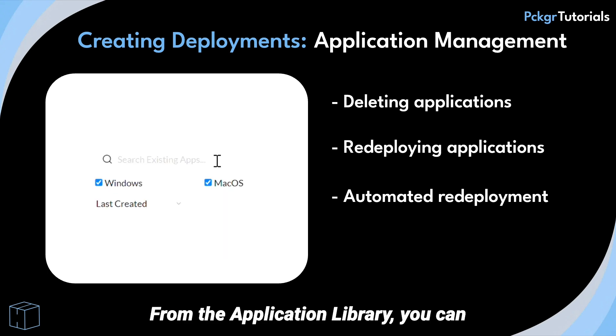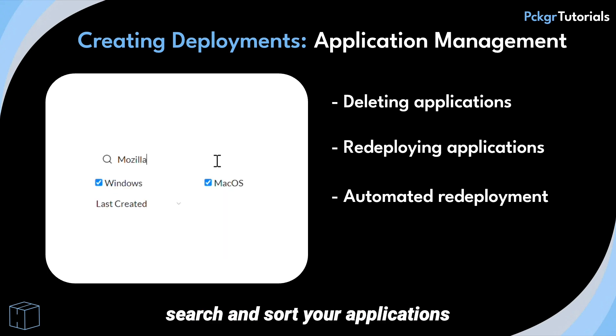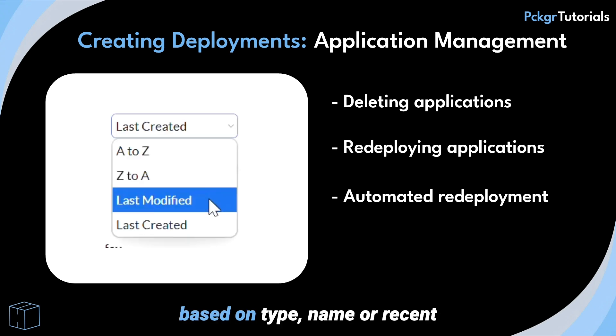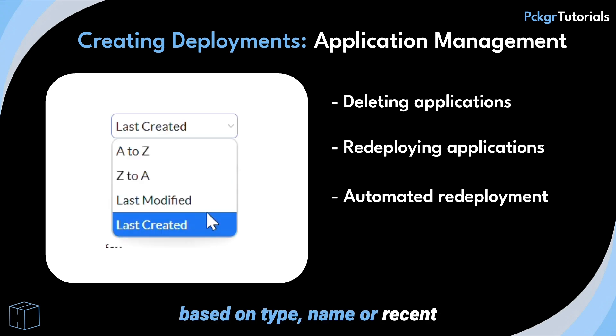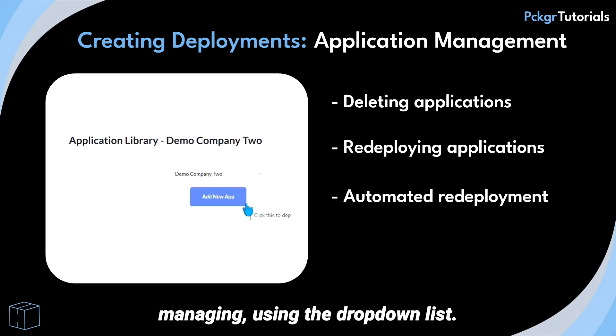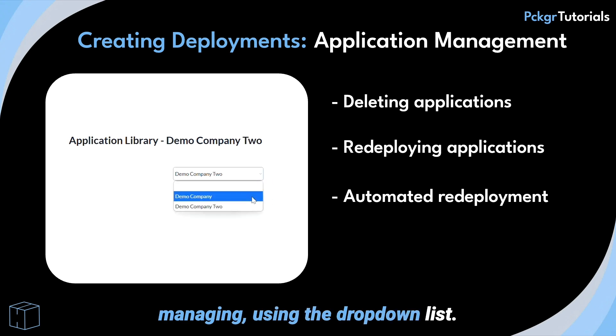From the application library, you can search and sort your applications based on type, name, or recent deployment for each company you are managing using the drop-down list.